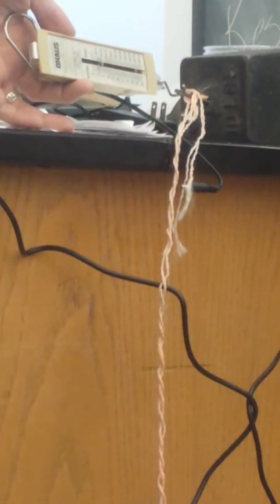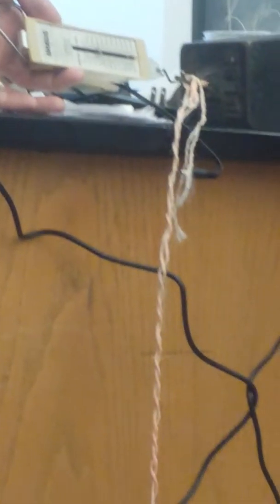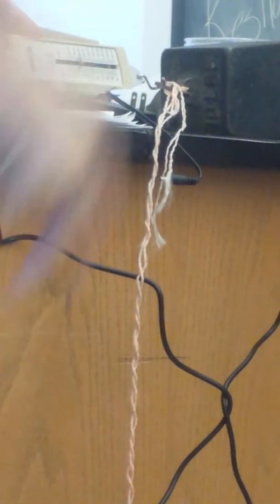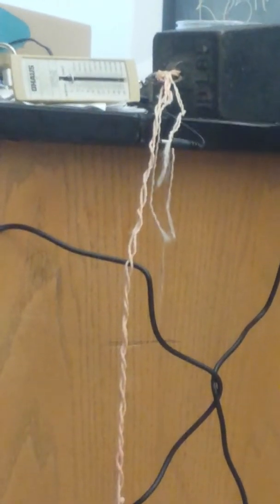Alright, so check it out. This is what happens in real life, right? The block's not moving and I'm pulling on it. The scale's reading one. That means there must be one newton of static friction pulling the other way. I pull even harder. It's up to about five now. Still not moving.